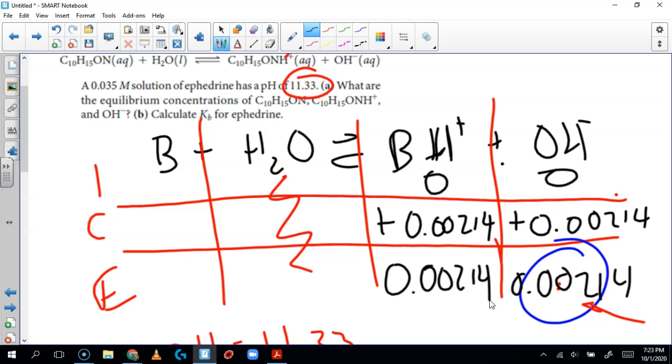We don't care about water. This is 0.035 at the beginning initially. That value is right there. So how much does this change by? Exactly right. It's the same amount because it's stoichiometrically a 1 to 1 to 1 to 1 ratio. So now we can do the math and get 0.035 minus 0.00214, and we get 0.0329.